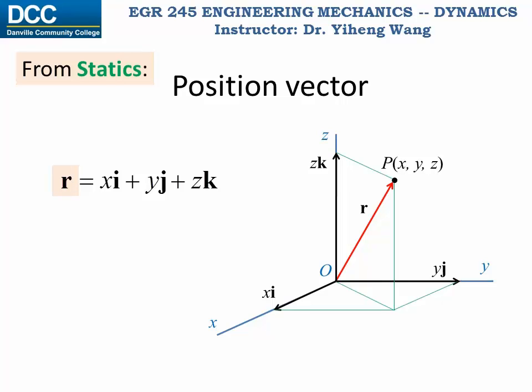This position vector r is written in Cartesian form as xi plus yj plus zk. Here i, j, k are the unit vectors along the x, y, z axes respectively.